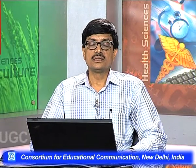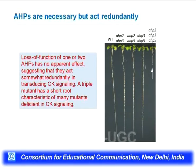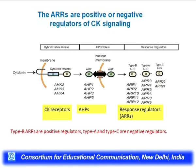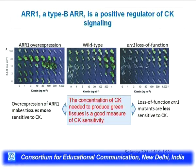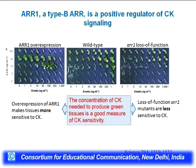In brief, the cytokinin signaling summary: wild-type plants respond normally to cytokinin; mutants show much reduced response; overexpression plants show exaggerated response. For example, if you make a triple mutant for the histidine phosphotransfer proteins, the plant becomes insensitive to cytokinin. This is how many response regulators and receptors have been identified and validated.